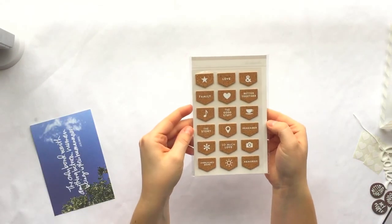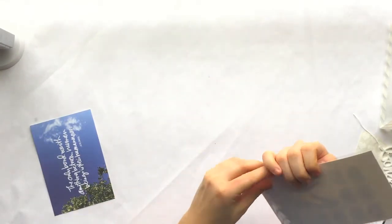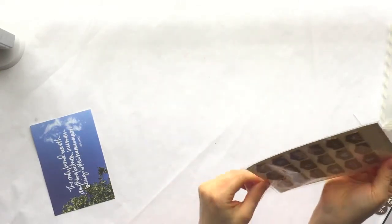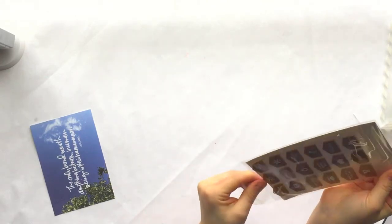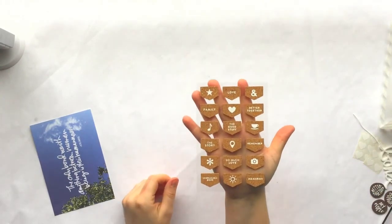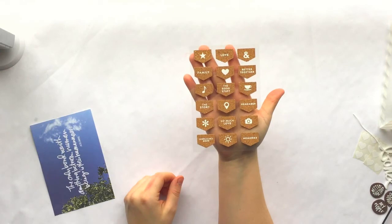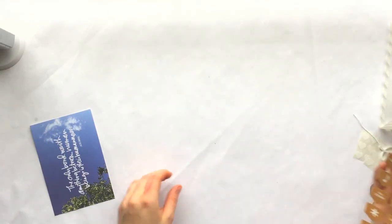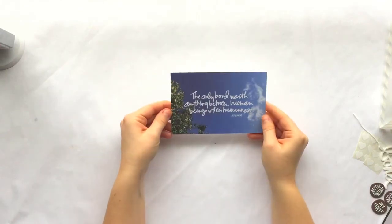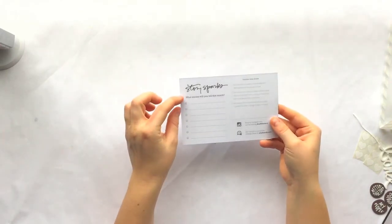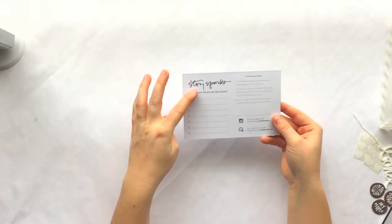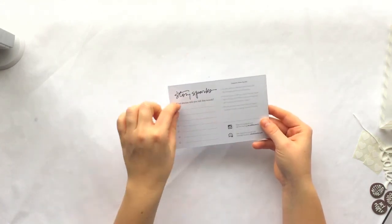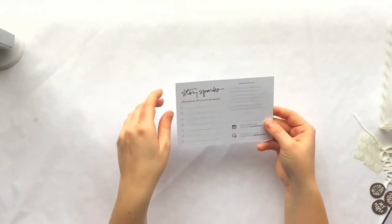I love these corkboard little flags just because it brings in different texture and they have sayings on it. And then the last part is this card and I love this because it comes in your kit and you can just jot down stories. If you try to remember a story in your photos, it's just a great way to jot down what you're going to talk about for that week or that month.